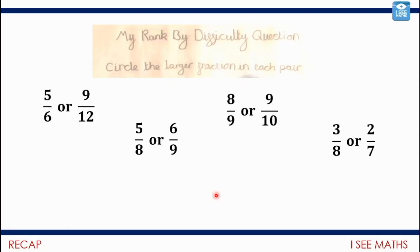If the denominator - the bottom part of the fraction - is the same, we can just compare the numerator. Here, five-sixths and nine-twelfths are not the same denominator, so it's harder to compare them. But if we double five-sixths - double both the denominator and numerator - we get an equivalent fraction in twelfths: five-sixths equals ten-twelfths.